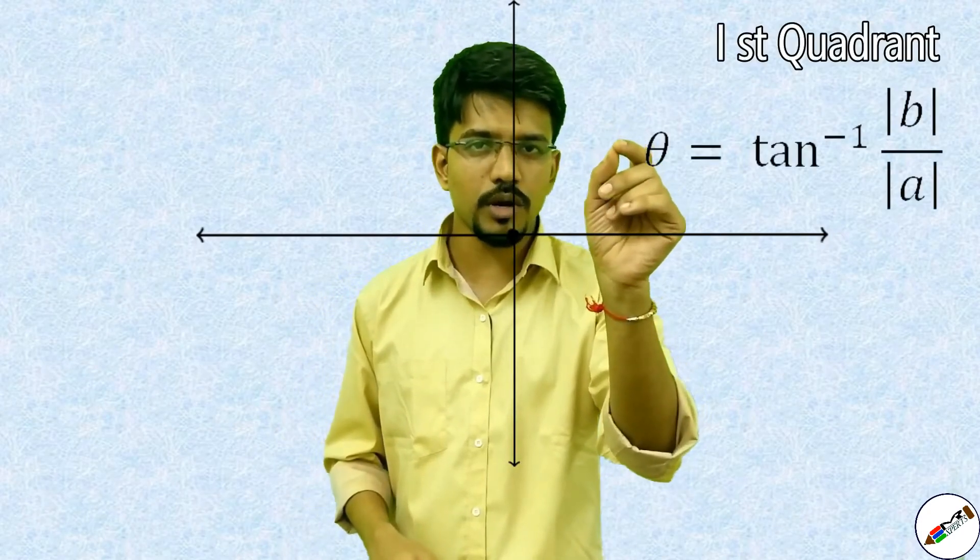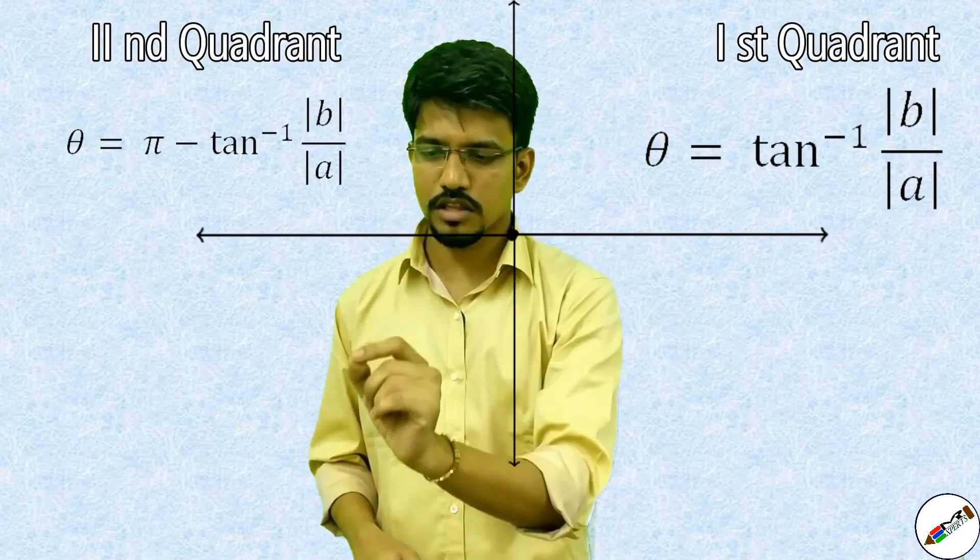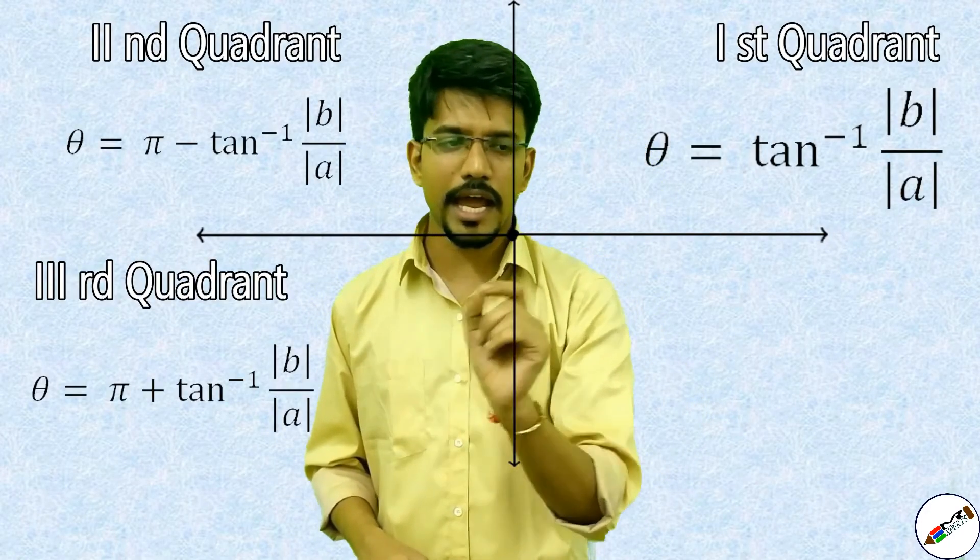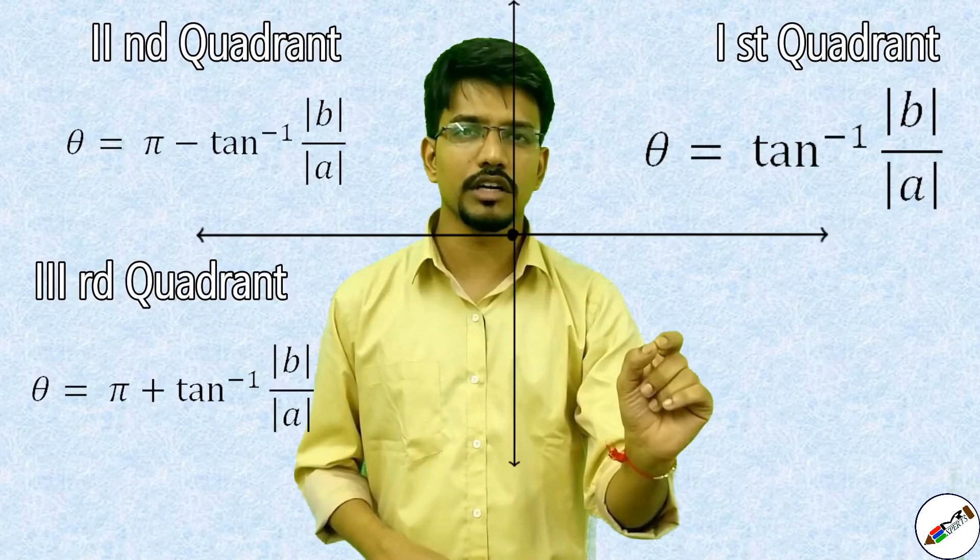Let us draw a new real axis and a new imaginary axis. While dealing with the amplitude or argument of any complex number, we need to only know the quadrant in which the complex number lies — whether it is in the first, second, third, or fourth quadrant.